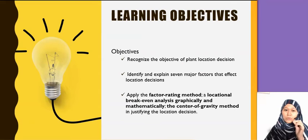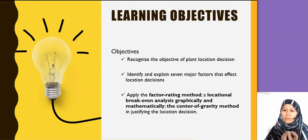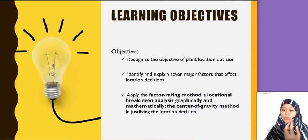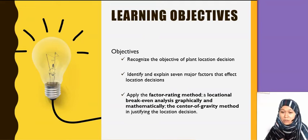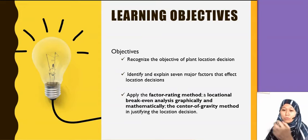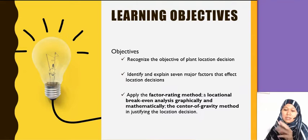The learning objective here is to recognize what are the objectives of the plant location decision — why the manufacturer moves to a new place or even to a new country, and what are the factors that the company needs to consider before they plan to move. In part two, we're going to look at three methods in plant location.